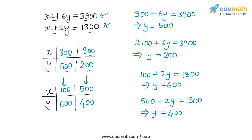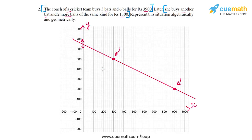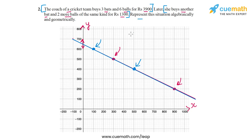Let's plot these two points and draw a line through them. The solution (100, 600) and (500, 400) — interestingly, both these solutions lie on the first line. This means the second line is exactly identical to the first line. So in this case, the two linear equations produce identical lines, and the geometrical representation of this situation is this pair of identical lines.